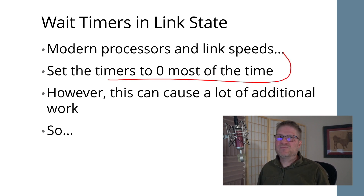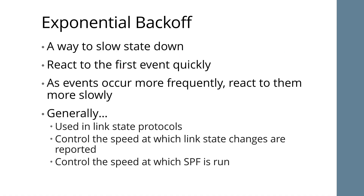With modern processors and high-speed links you typically want to set your timers to zero, but that causes more SPF runs and more flooding. What you do in these situations is run exponential backoff: this allows you to react to the first event very quickly — in zero seconds or just milliseconds — and then as changes occur more rapidly, slow down the rate at which you react. This lets you get very fast convergence on the first change while preventing runaway SPF computation during instability.